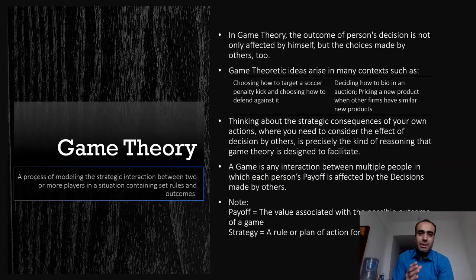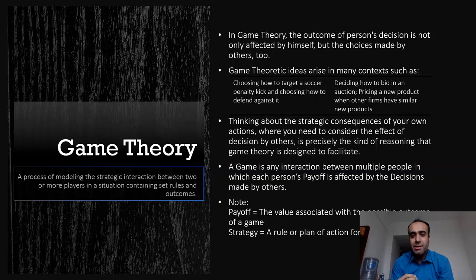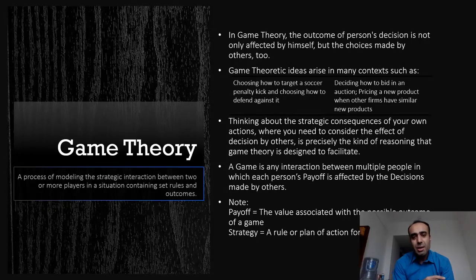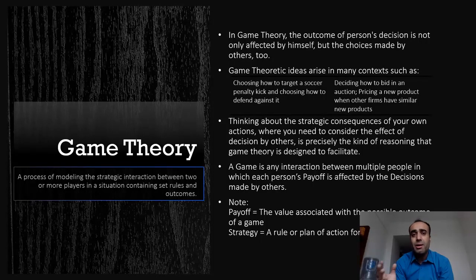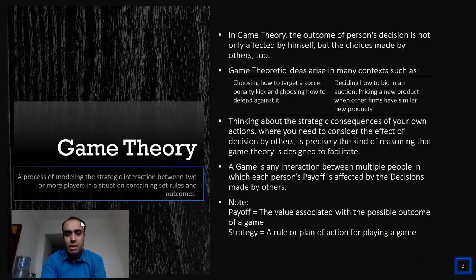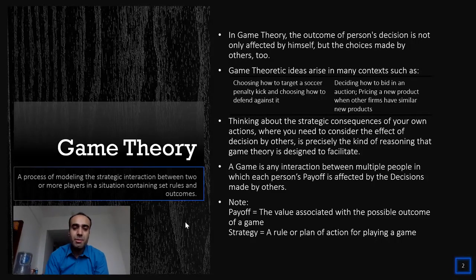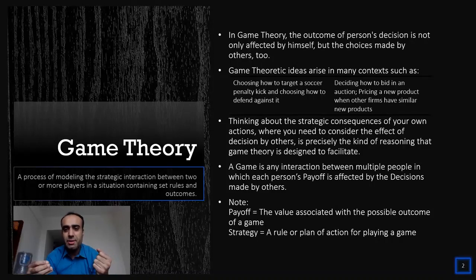In game theory, the game is the key ingredient. To understand game theory in depth, we need to understand the game itself. A game is any interaction between multiple people — we call them players — in which each player's payoff is affected by decisions made by others. Two key terms we'll use a lot are payoff and strategy.